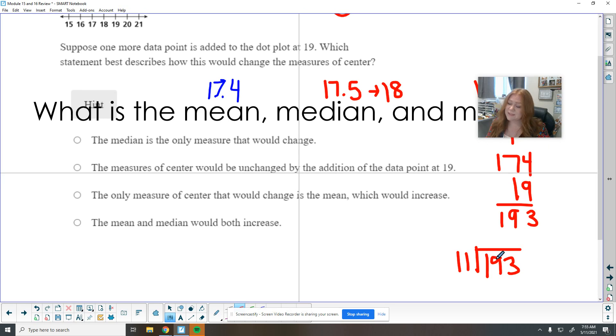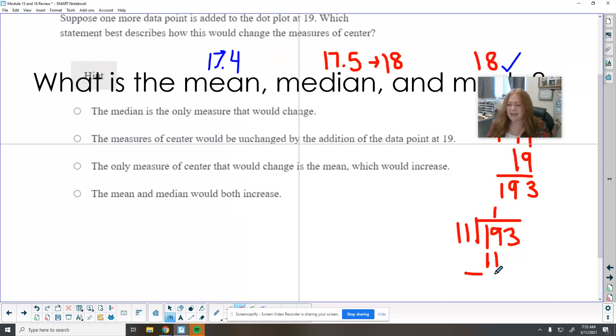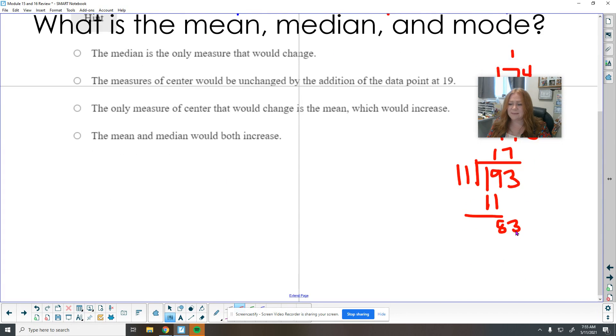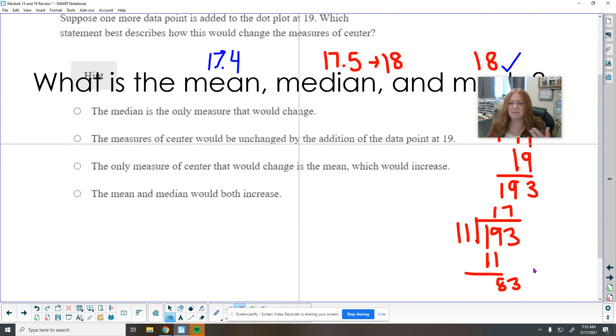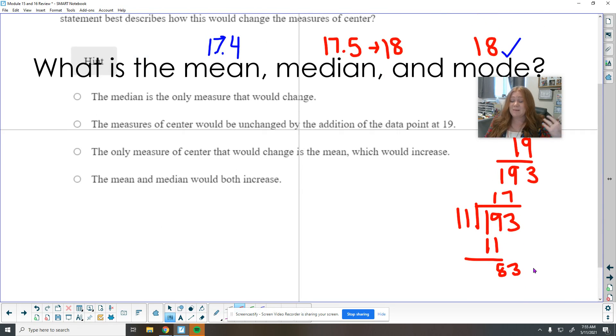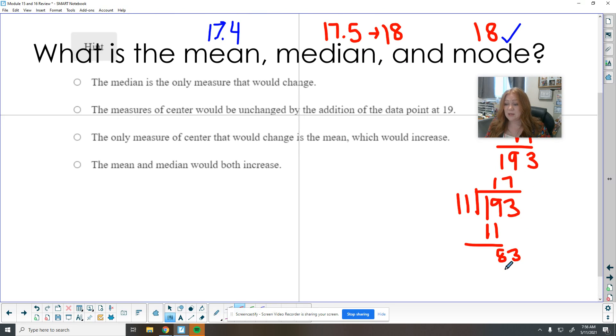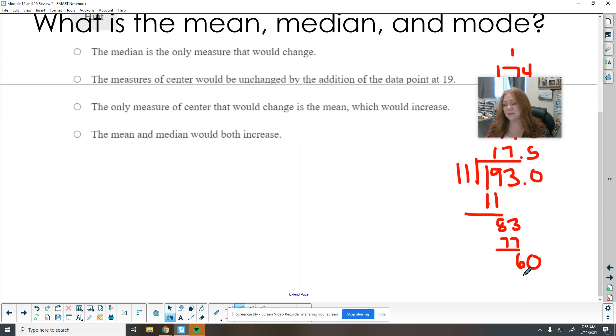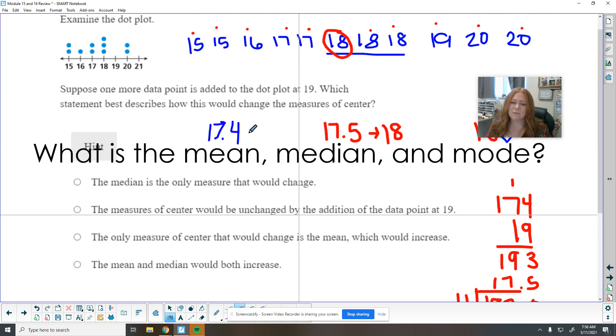So 11 goes into 19 one time. So we have eight left over, goes into 83, seven times. So we're still about 17. So it might just bump it up a tiny bit more. So it'll be about 17.5 now. So we've got six left over. So I'm going to add this decimal, goes into 6, 5 times, which is 55. And it's just going to keep going for a little while. So it's about 17.5. So it really didn't change the mean that much.